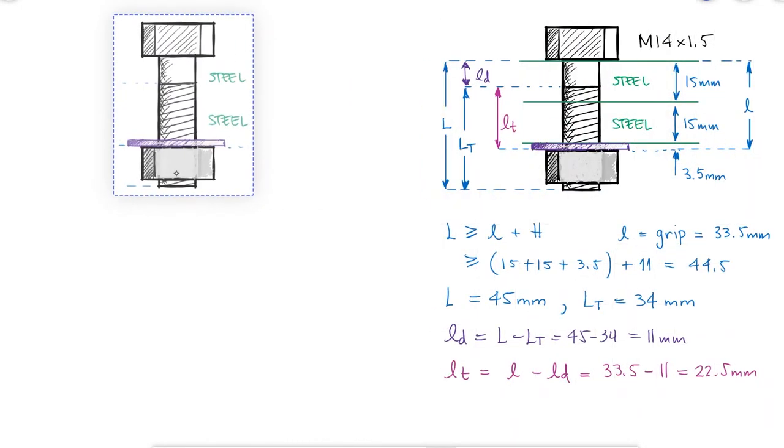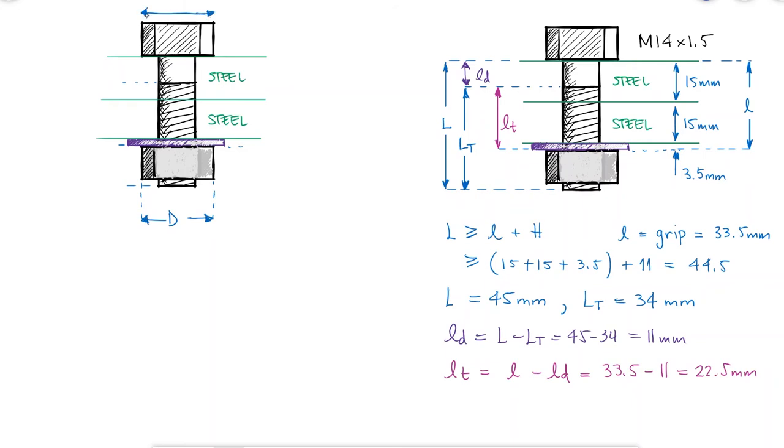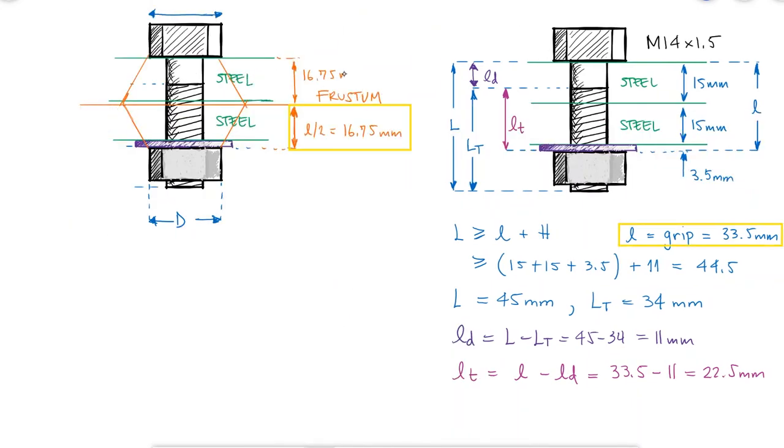As for the members stiffness, and because the capital D diameter of the head of the bolt and the nut are the same, the frustum will be located at the middle of the grip.